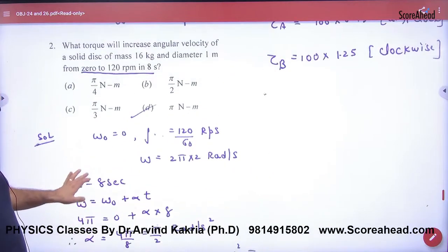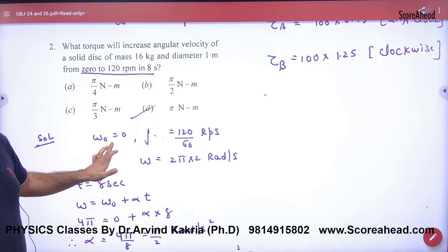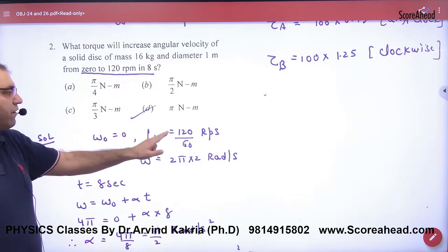Alpha. For alpha to take off, this disk starts from rest. Omega naught is equal to zero. Frequency 120 rpm.